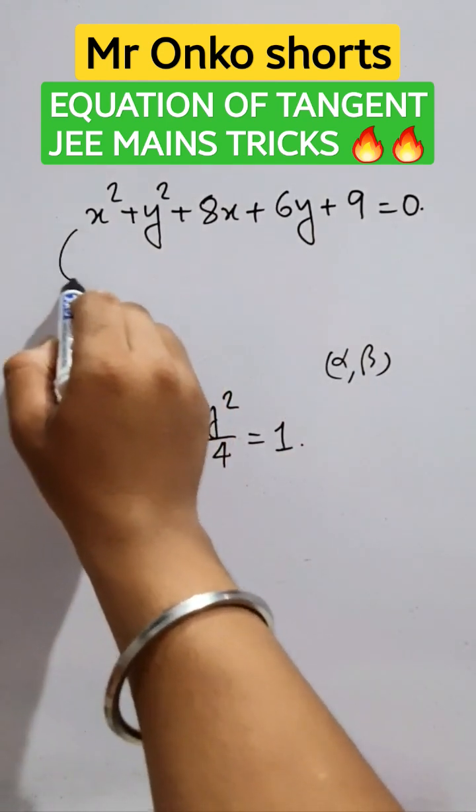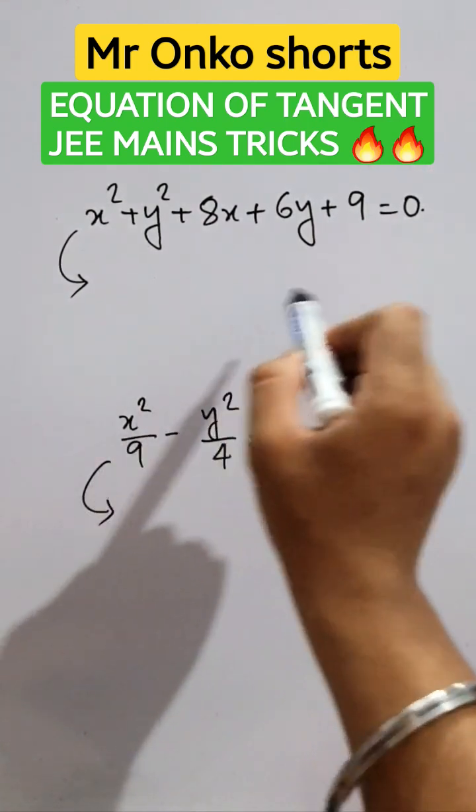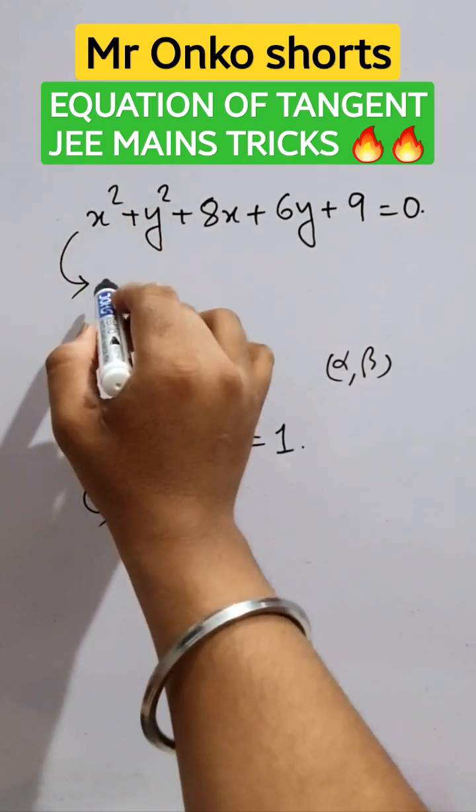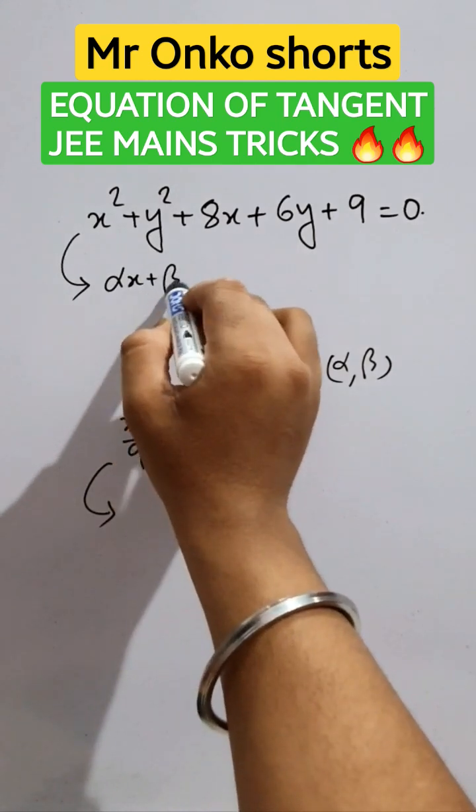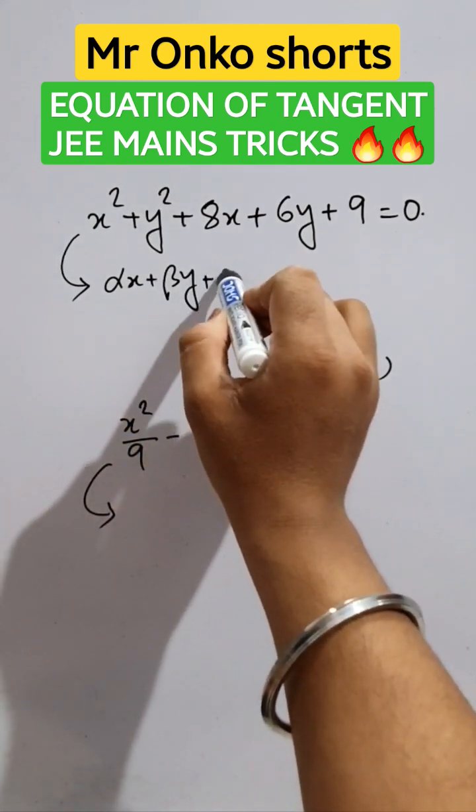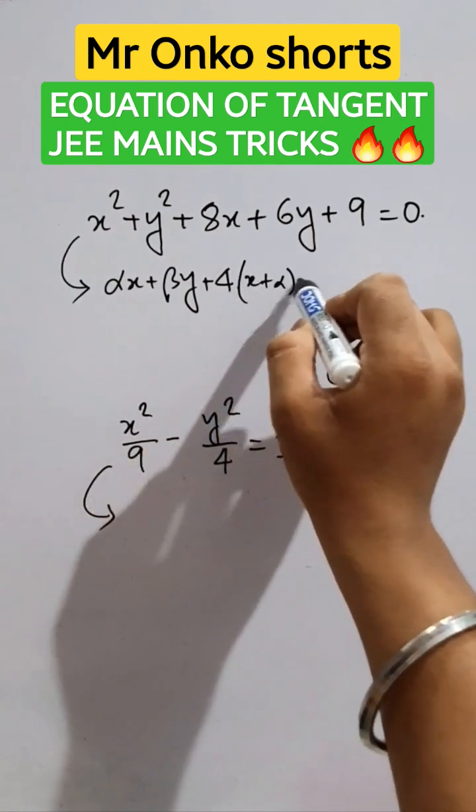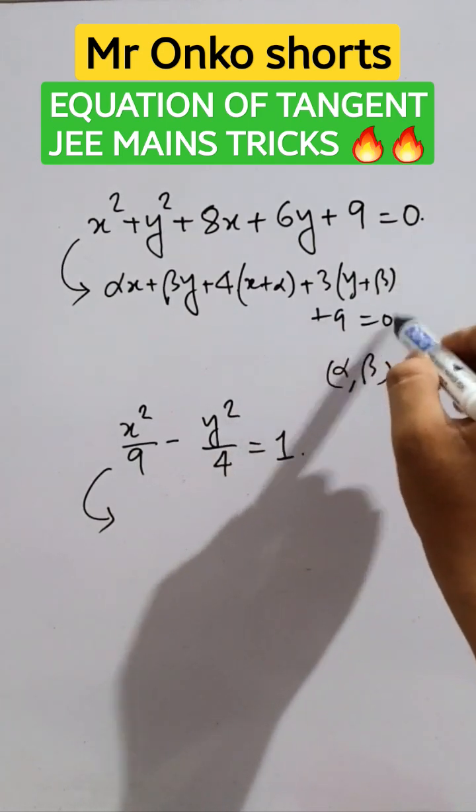Now let's utilize the shortest tricks for this problem. So first of all in this case we have to take the tangent equation as, since it's x square, it will be alpha into x plus beta into y plus 4 into 2x, so 2x will be written as x plus alpha plus 6y, 3 into y plus beta plus 9 equals to 0.